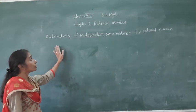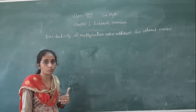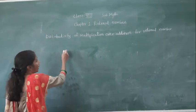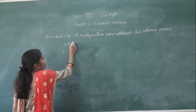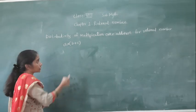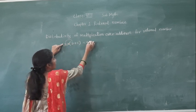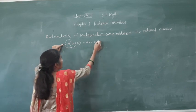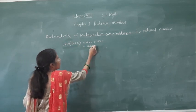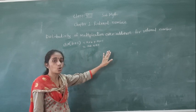Let's learn now: distributivity of multiplication over addition for rational numbers. We have to learn this distributive property of multiplication over addition. One distributive property: a into bracket b plus c. These are rational numbers. What it shows: a into bracket b plus c equals ab plus ac. This is the distributive property of multiplication over addition.